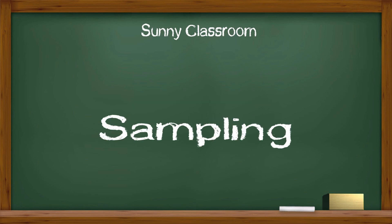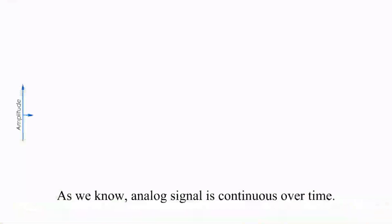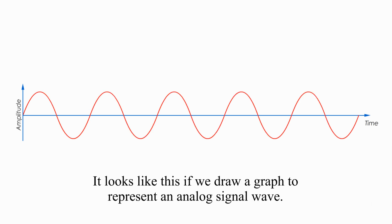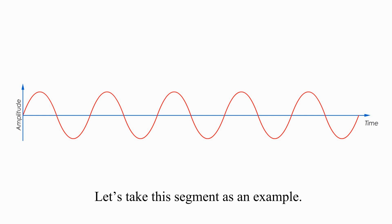Let's start with the first step, sampling. As we know, analog signal is continuous over time. It looks like this if we draw a graph to represent an analog signal wave. Let's take this segment as an example.